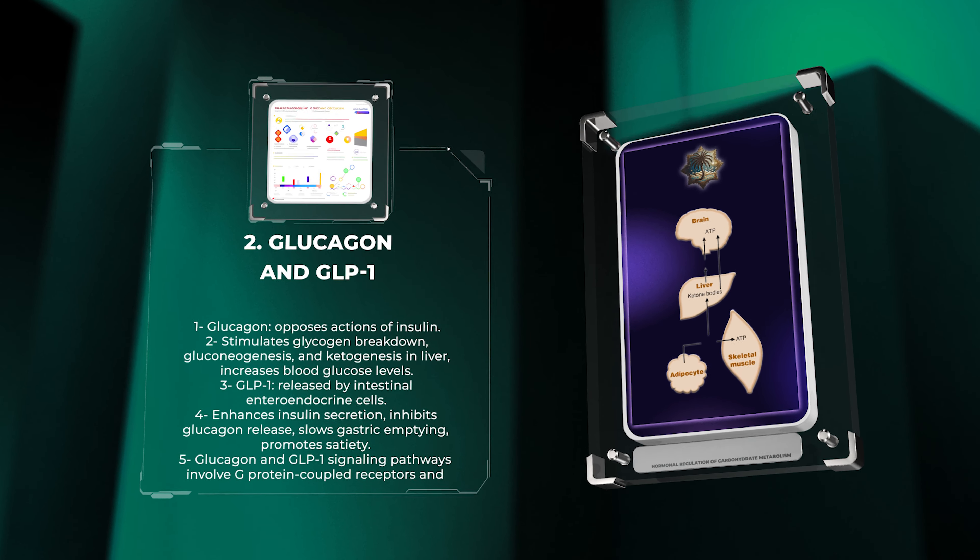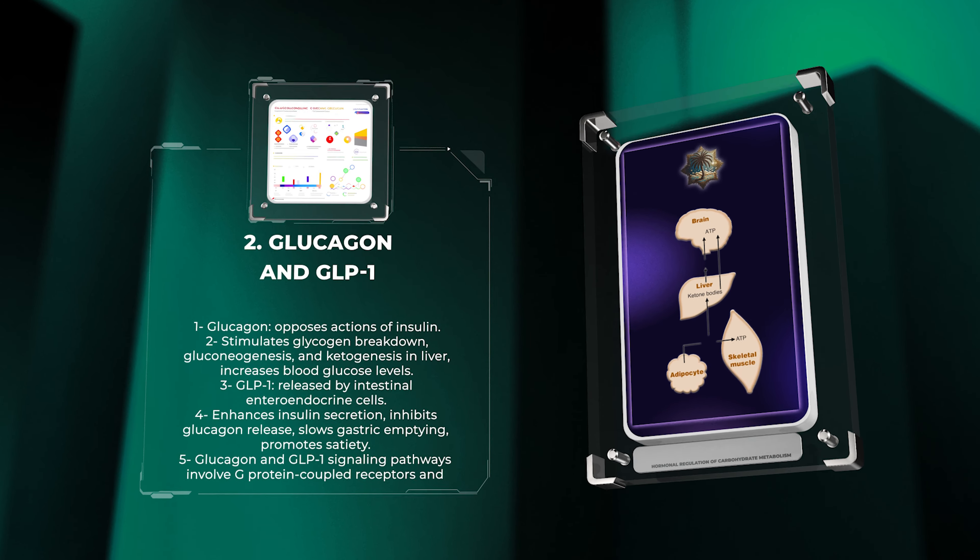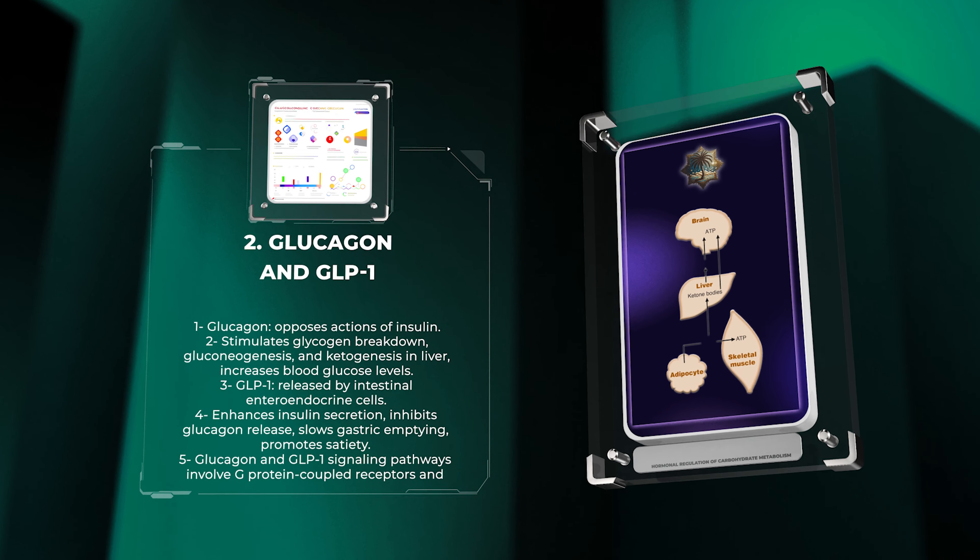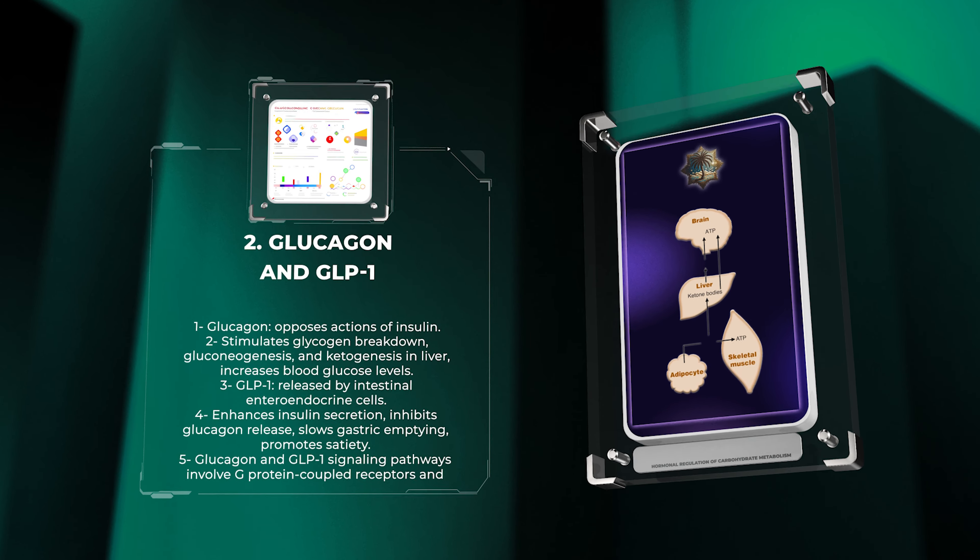GLP-1 enhances insulin secretion, inhibits glucagon release, slows gastric emptying, and promotes satiety. The signaling pathways of both glucagon and GLP-1 involve G-protein-coupled receptors and intracellular effector mechanisms.